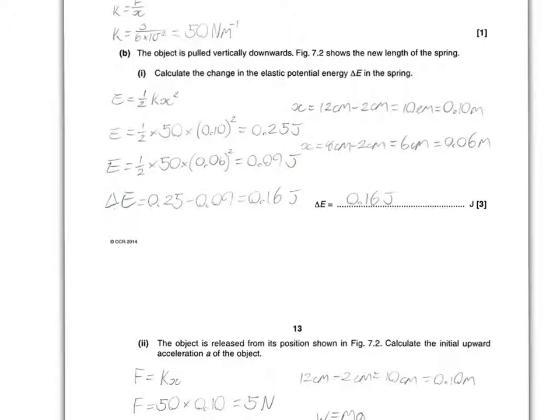The difference in E is 0.25 minus 0.09, which is the total of 0.16 joules, which is the difference. You don't have to write the joules here, because it's already been put for you, but it is recommended, it's just there for you.